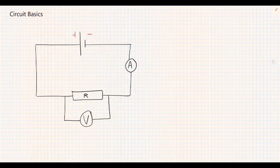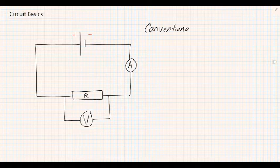Conventional current is the direction of current flow from positive to negative. So current flows from positive to negative.